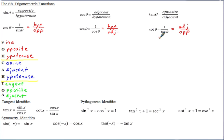Now some basic trig identities. Tangent, remember, is sine over cosine — that's the one we'll use more than any other.